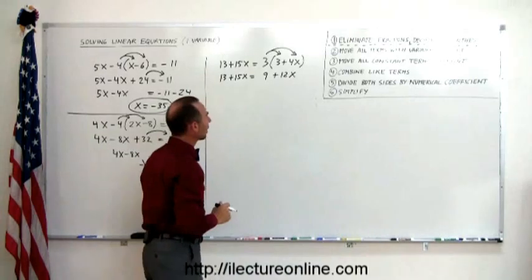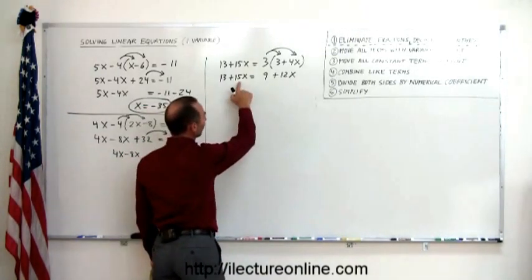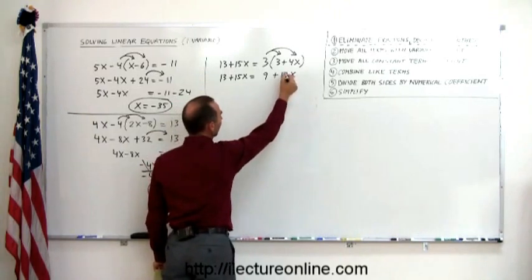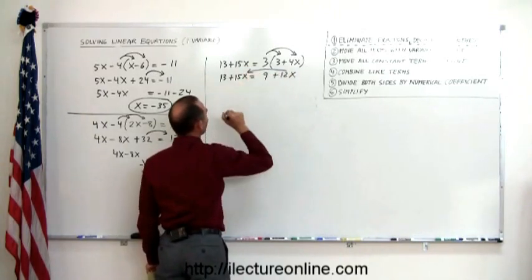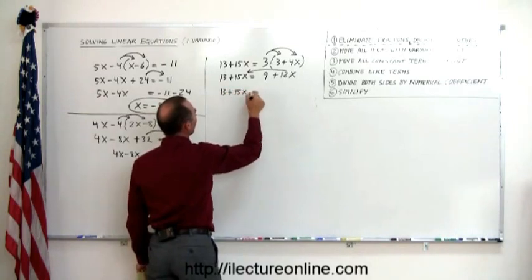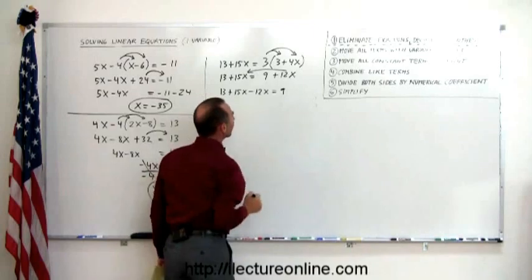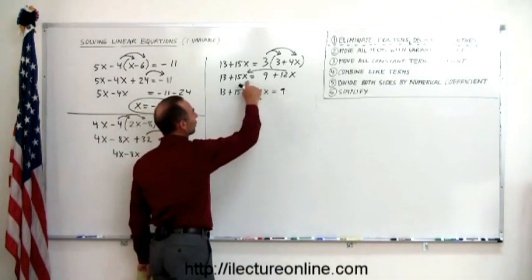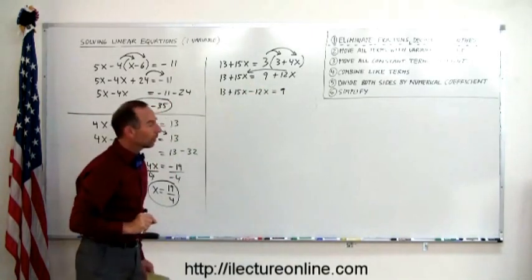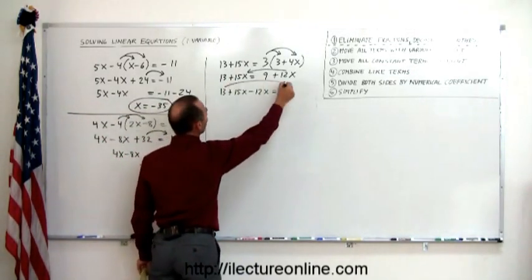So now we have gotten rid of our parentheses. We don't have fractions. Let's move on to the second step. Move all the terms with the variable to the left. I have one here that's already in the right place. I have one there. I must move that over here. So we have 13 plus 15x minus 12x equals 9. The 9 stays on the right side. Remember, when you cross the equal sign, the sign changes to a negative. Then I move all the constants to the right. So I have 15x minus 12x equals 9 minus 13.